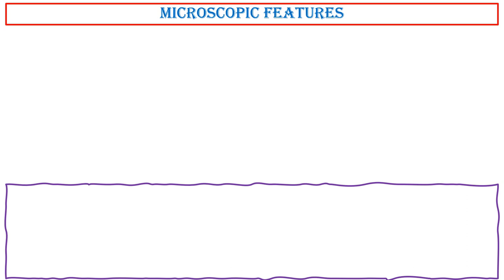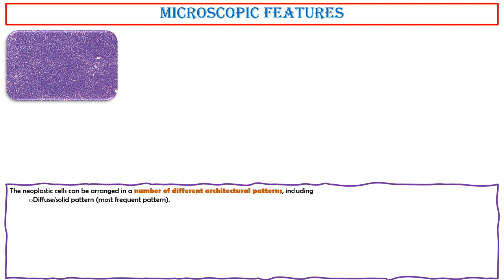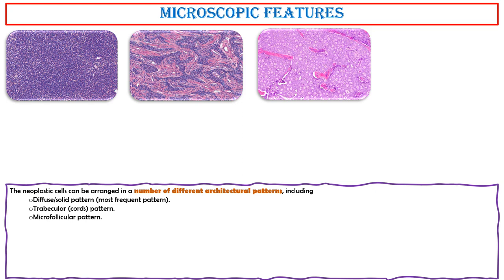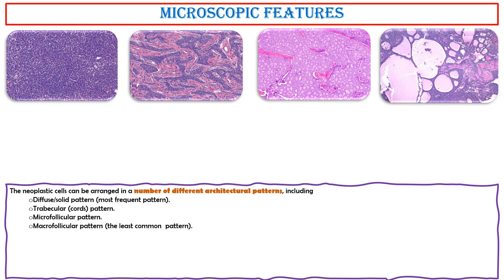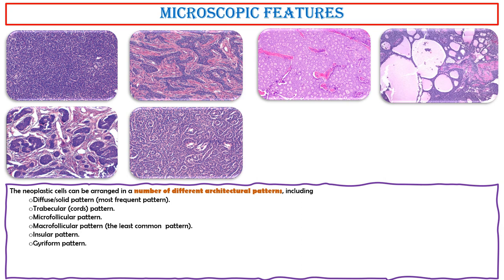Microscopic features. The neoplastic cells can be arranged in a number of different architectural patterns, including: diffuse solid pattern, which is the most frequent pattern; trabecular/corded pattern; microfollicular pattern; and macrofollicular pattern, which is the least common pattern.